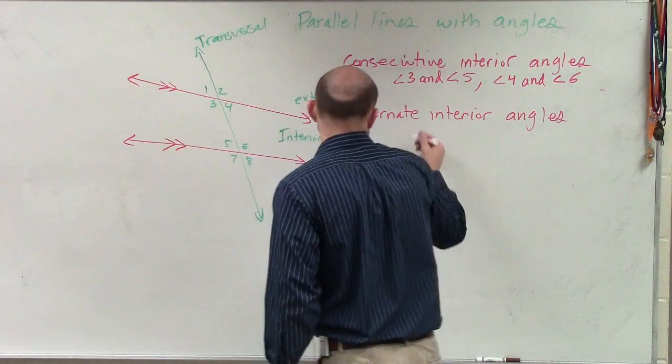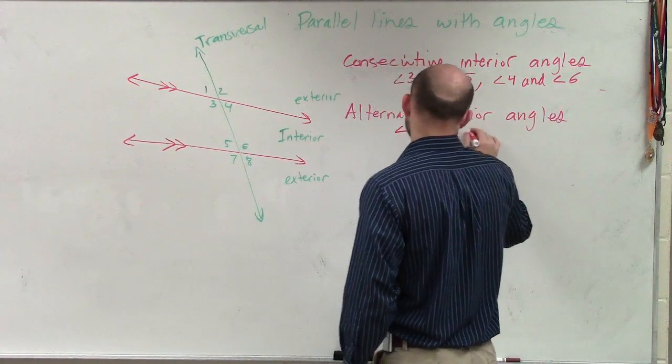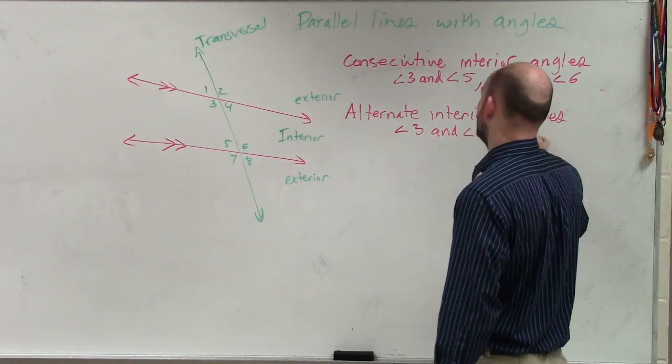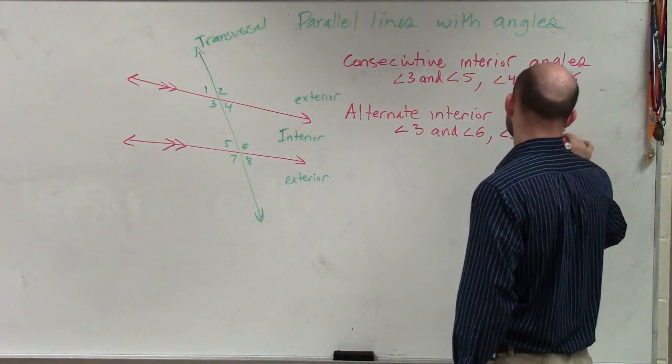So an example of alternate interior angles would be angle 3 and angle 6. Another example is angle 5 and angle 4.